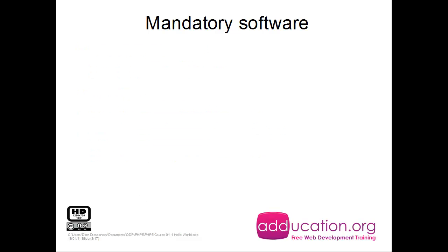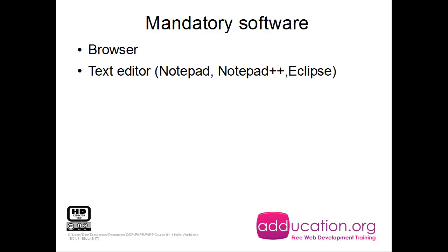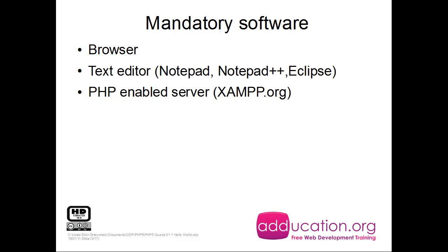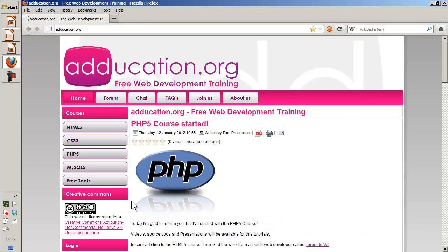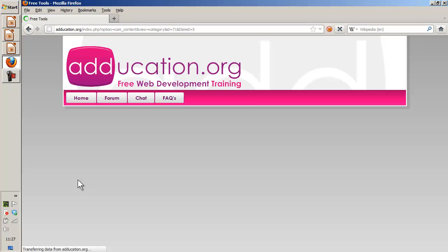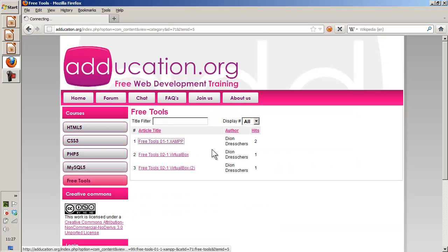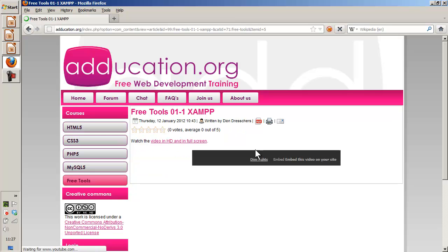First, the mandatory software. I need a browser — obvious. Then I need a text editor: Notepad, Notepad++, or Eclipse. Then we need a PHP-enabled server, a server capable of running PHP. If you don't have one, you can go to exam.org — I will use exam.org in this course. If you don't know how to install it, go to that website under free tools and watch the video explaining what XAMPP is and what it does.